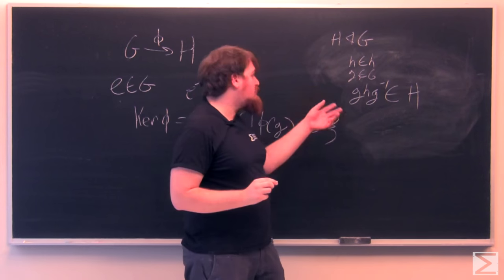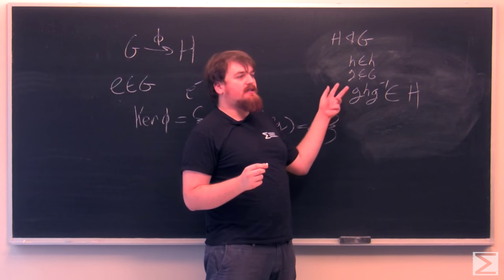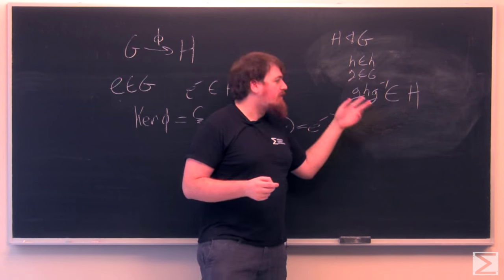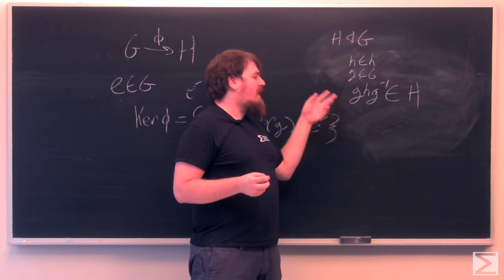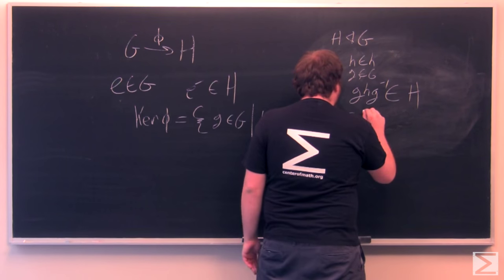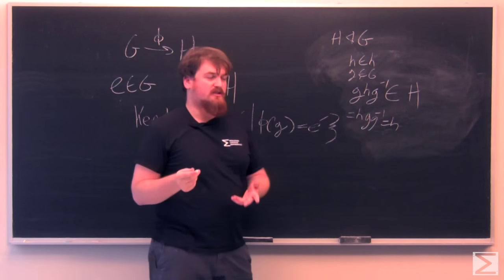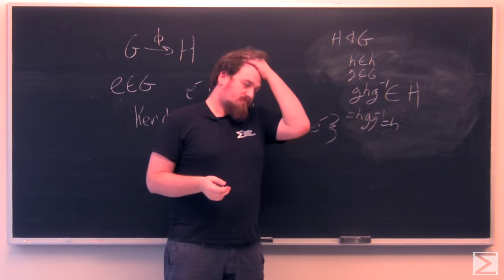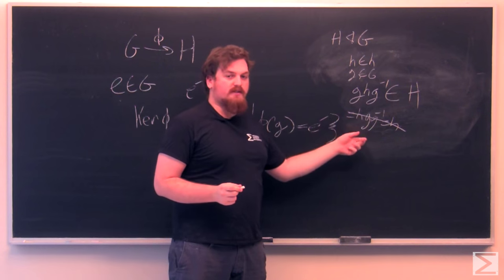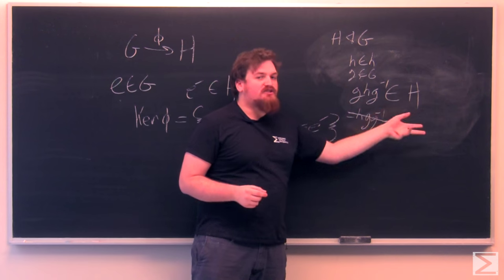The conjugation of H by G is when you multiply H by G on one side and G inverse on the other side. Any of those conjugations will be in H. Now, this doesn't mean that H has to commute with G. If it did commute with G, then this would equal H, which is obviously in H. This property itself doesn't always imply this.